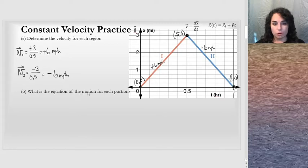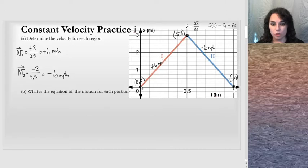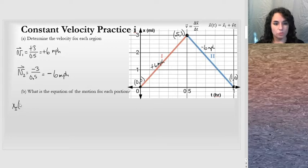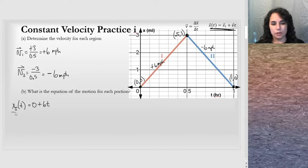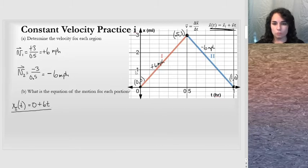What is the equation of motion for each portion? We want to write the equation that represents the red line and the equation that represents the blue line. So the position in region 1 as a function of time — following the general equation, take the initial position. For the red part, the initial position was 0, and add on vt, so plus 6t. I'll leave the 0 in there to recognize that it's 0. So there's the equation of motion for that first region.